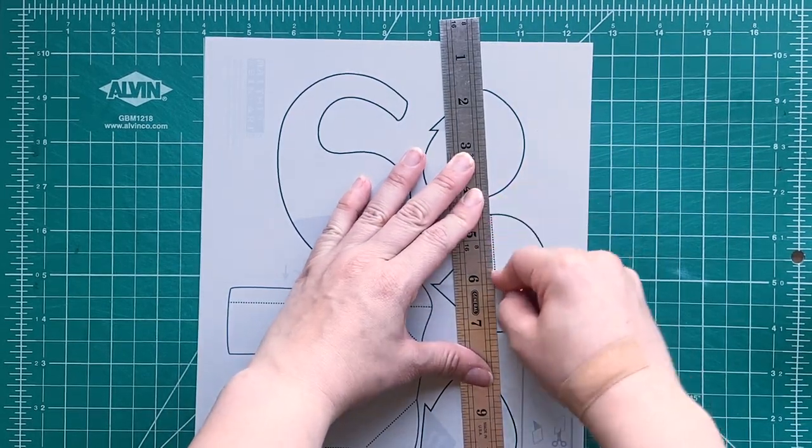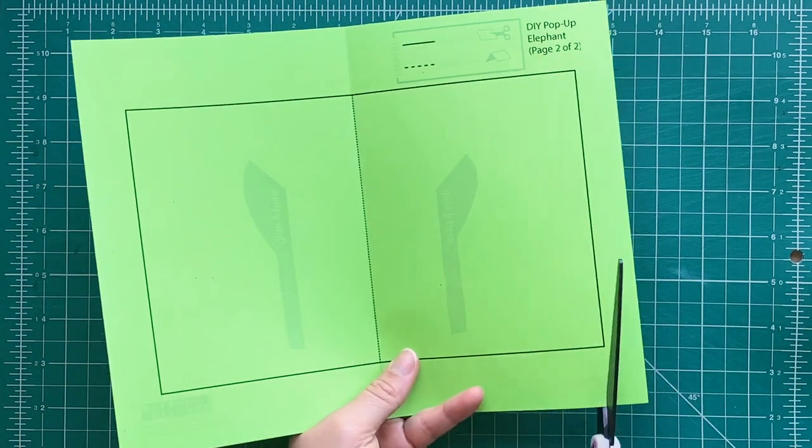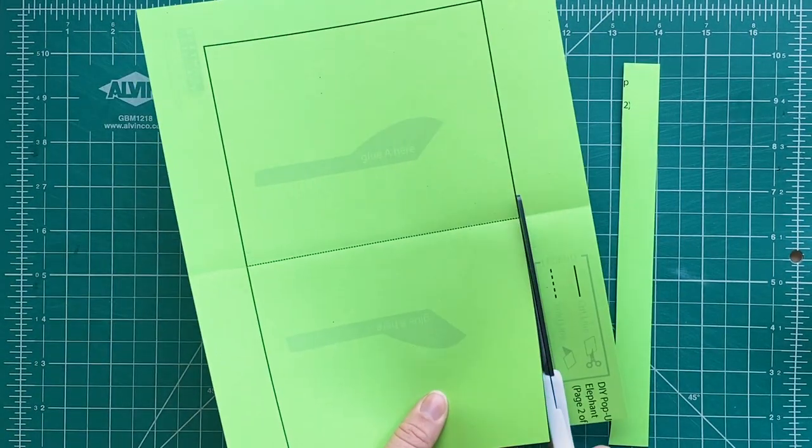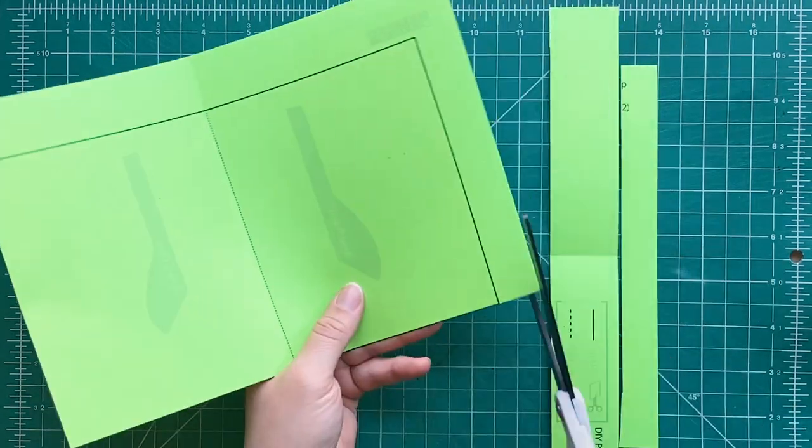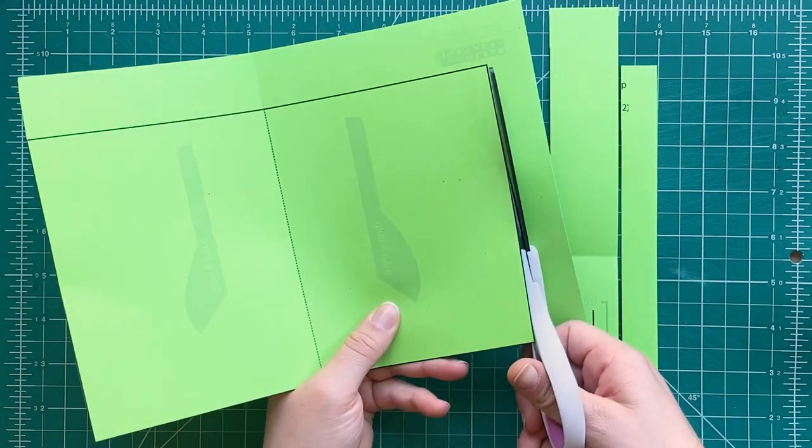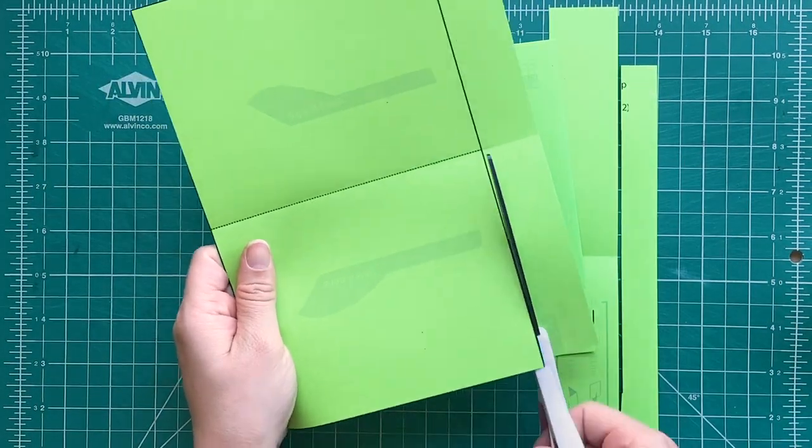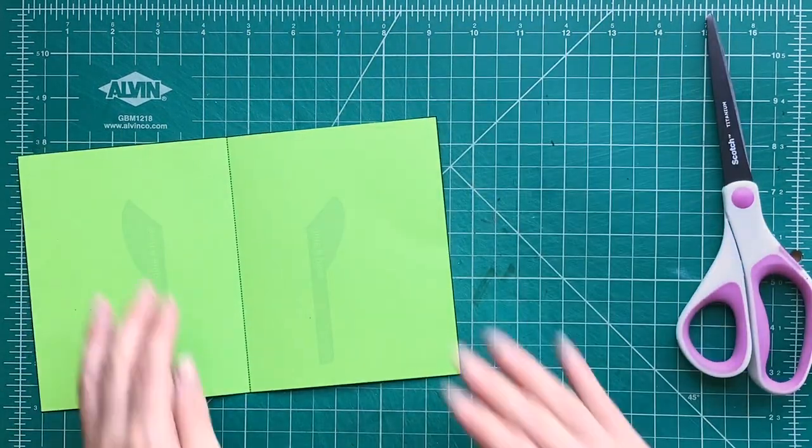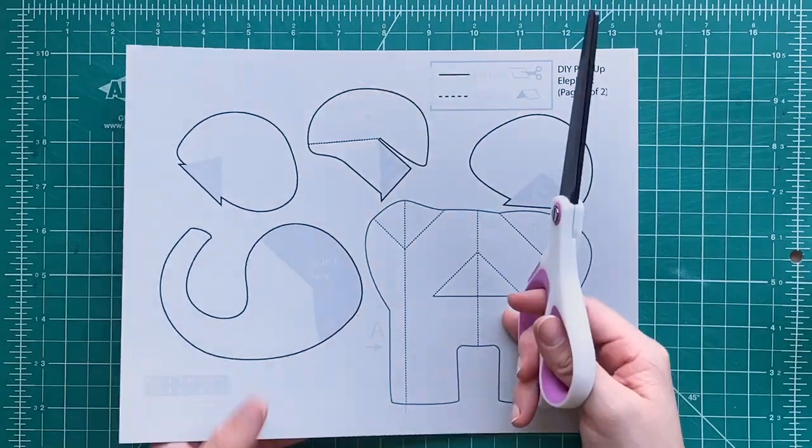All right, so we're gonna finish scoring all these dotted lines. The next step is we're gonna cut using a pair of scissors all of the solid black lines. So just follow along and cut out the base page and we're gonna cut very carefully all of the pop-up pieces including the base page for our pop-up card.